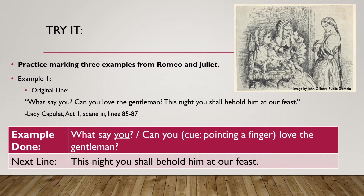I read that line with not much emphasis. Now listen as I read my oral interpretation of the same line: 'What say you? Can you love the gentleman?' Notice that I added emphasis to the first 'you' and showed that by marking it with an underline. I then added a slash between the first question and the second question — that's a symbol for a pause. And while an oral interpretation does not need any hand gestures at all, I added a pointing finger to reinforce that it's Juliet's decision to make.